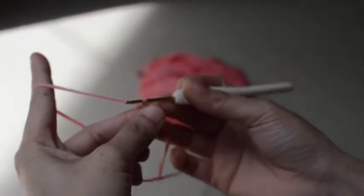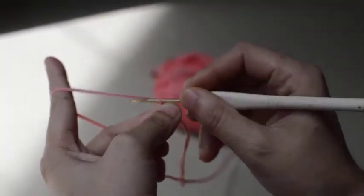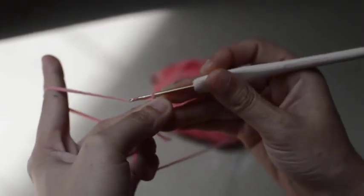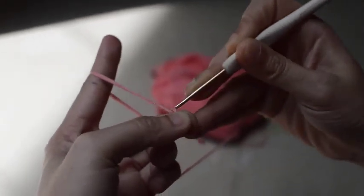To start with a chain stitch, we wrap the yarn around the hook and then pull it through the loop.